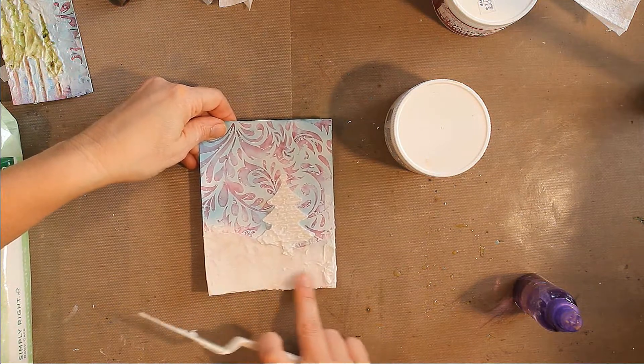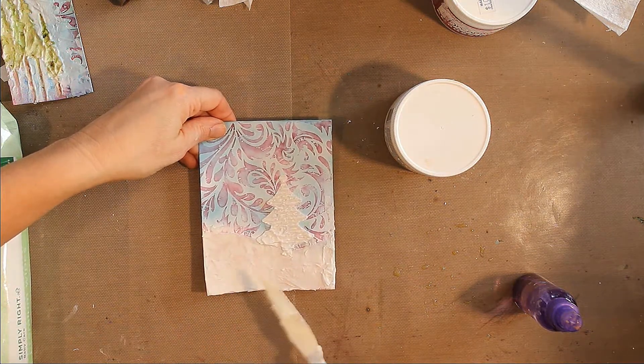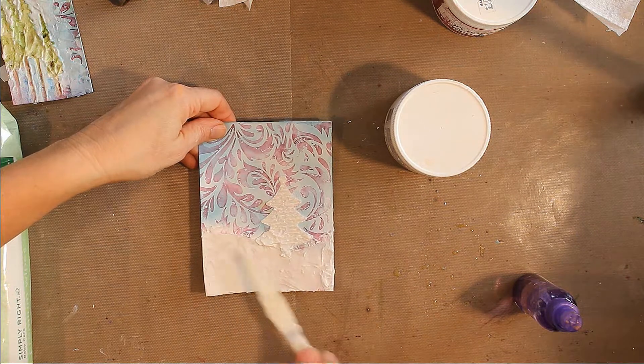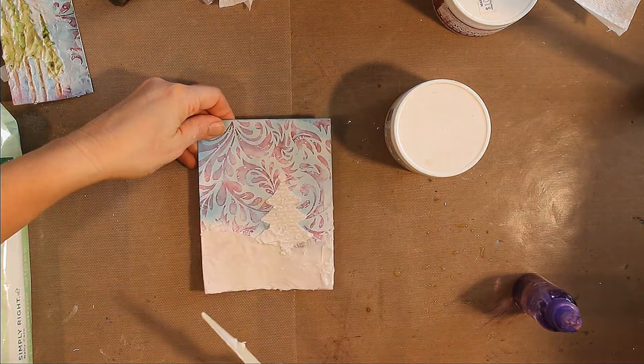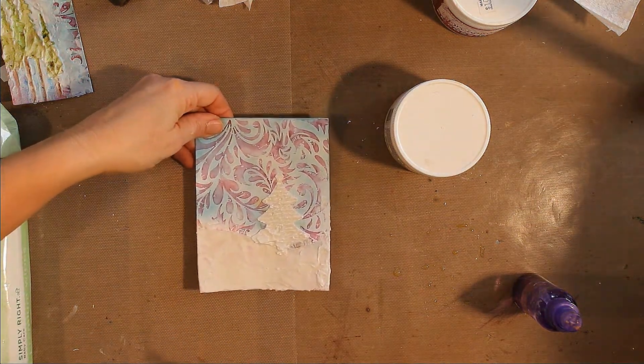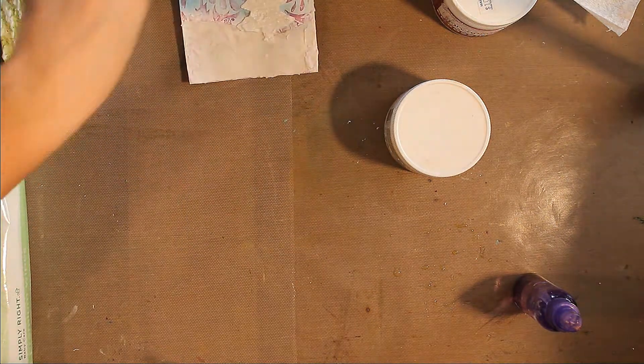I've already created some snowy background down here with embossing paste. I just used my knife, created a little hill, and now I have my tree on there. And we will set that aside to dry for a later project.